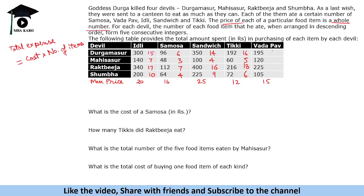For vada pav, the maximum possible price is 15, giving quantities 13, 8, 15, and 7. Now applying the condition: for each devil, the number of each food item eaten must form five consecutive integers when arranged in descending order. Looking at the first devil's quantities — 15, 6, 14, 16, 13 — this looks close but the value 6 breaks the consecutive sequence.